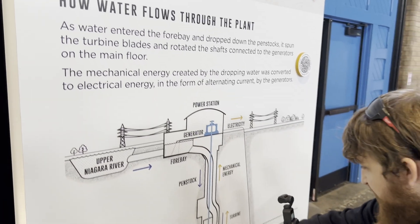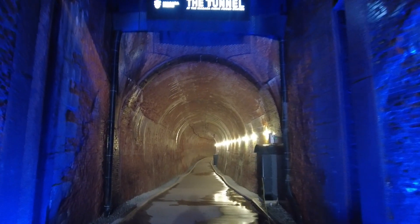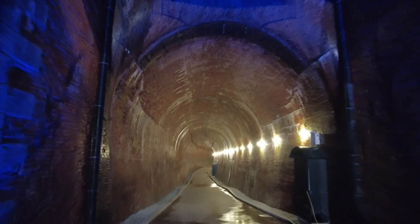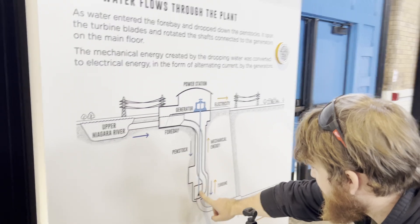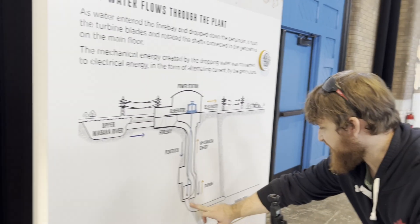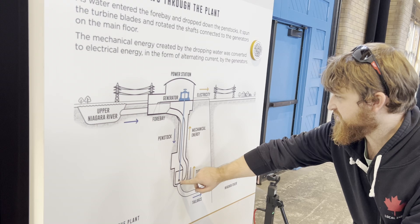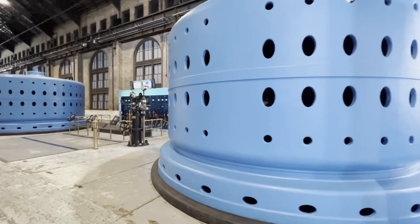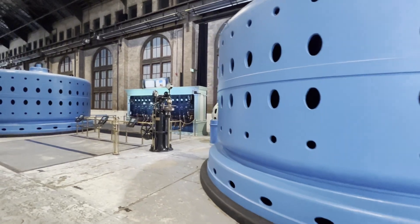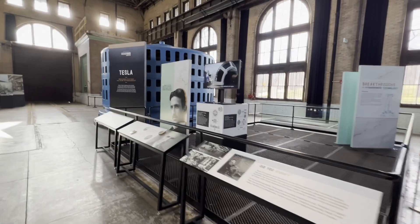So you've seen this many times: the generator, and then look at the water flow. The turbine is way below — that tunnel we were walking through. The water comes all the way down into here and spins the turbine, then it exits out the tailrace. When the turbine spins, it spins the shaft, which rotates the rotor, which generates power. These are the circuit breakers covered in oil.